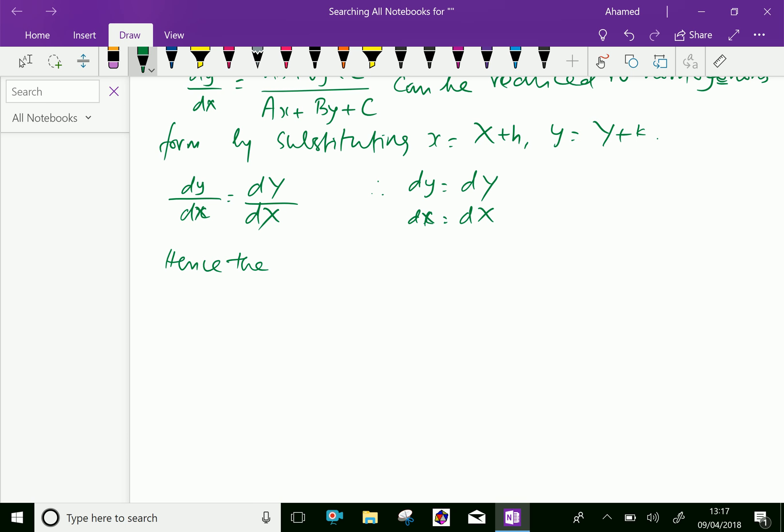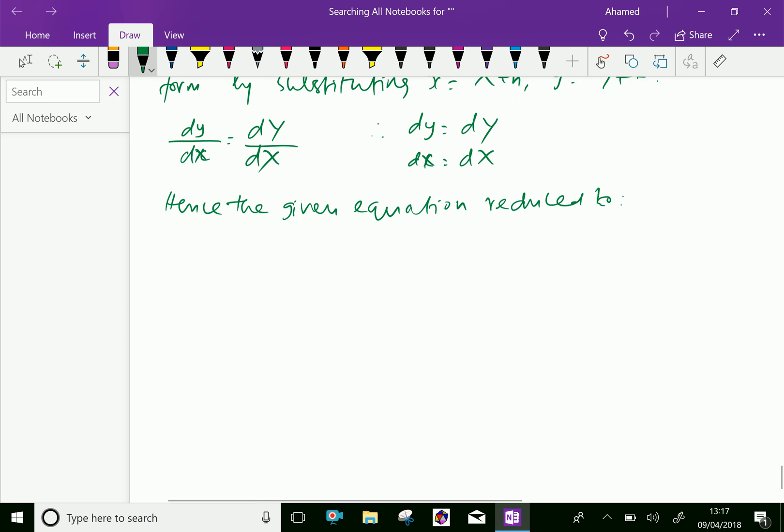Hence, the given equation becomes reduced to dy by dx equals aX plus bY over aX plus bY, plus the constants ah plus bk plus c over ah plus bk plus c.